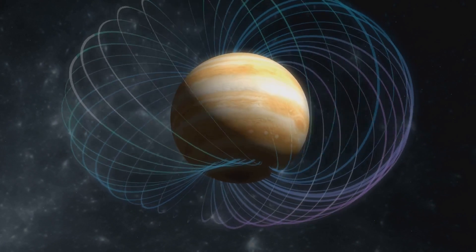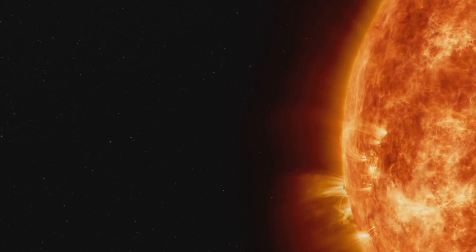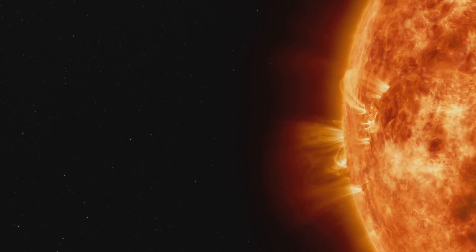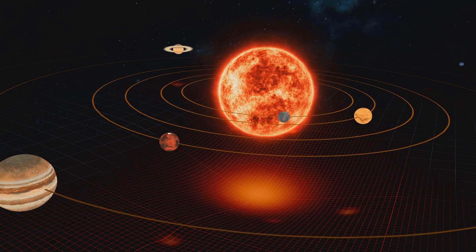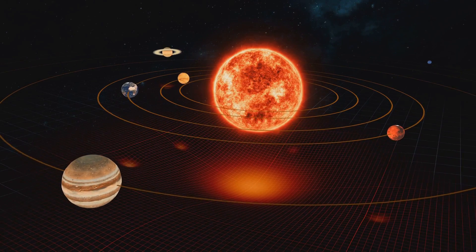How can a planet so small and slow generate a magnetic field? Several theories have been proposed to solve this mystery. One theory suggests that Mercury's core isn't completely solid, but partially molten. This molten core, despite the planet's slow rotation, could generate a weak magnetic field.